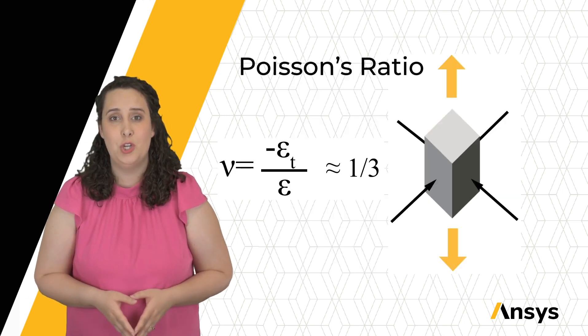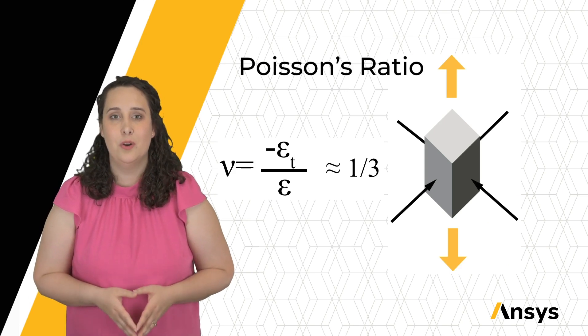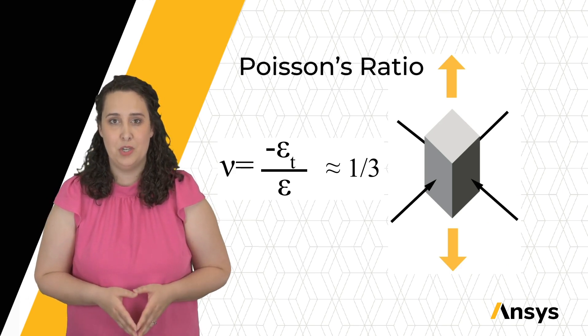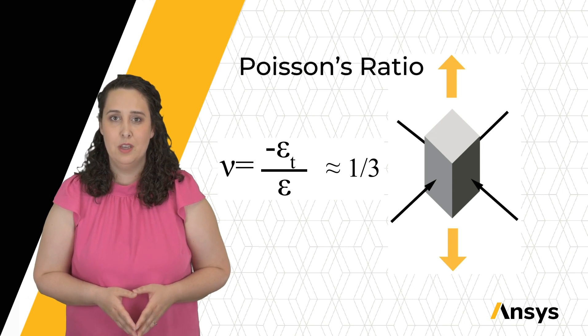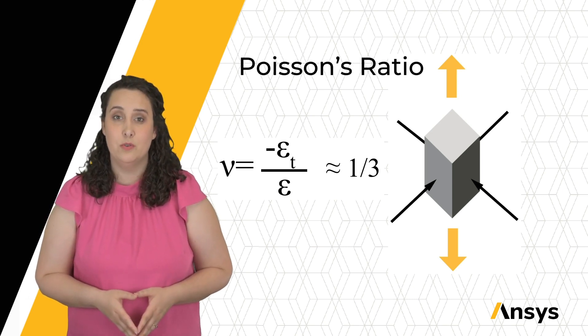We also learned about the shear modulus G and our bulk modulus K. Finally, we defined Poisson's ratio, which we use to help consider the length change that's occurring on the other axes of my material where I'm not applying a force. In tensile cases, this value is positive and often close to one-third.